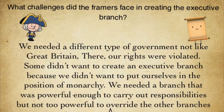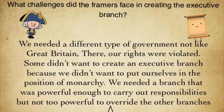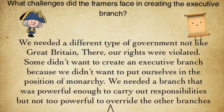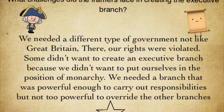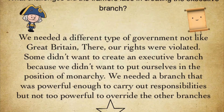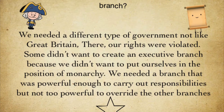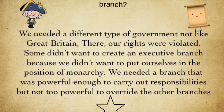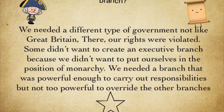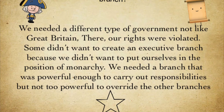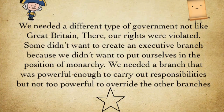We needed a different type of government than Great Britain, where our rights were violated. We didn't want to create an executive branch that could put us in the situation of a monarchy — we didn't want that. We needed a branch that was powerful enough to carry out responsibilities, but not so powerful that it could overpower the other branches.